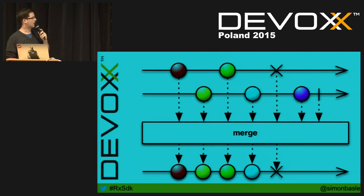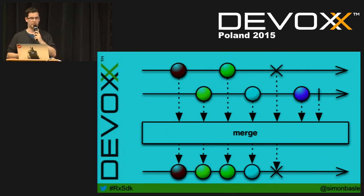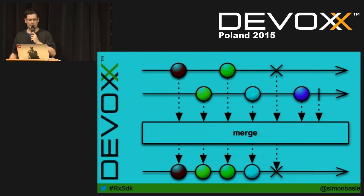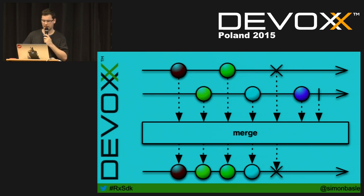Merge allows you to take two source observables and merge them together — that's actually what flatMap does. FlatMap is nothing more than a map and a merge combined. Items get interleaved in the output. Notice that an error in the first source observable propagates directly, so a subsequent item never gets emitted. Beyond these basics, you get filtering with predicates, operators to only take the first N items, and many more possibilities.